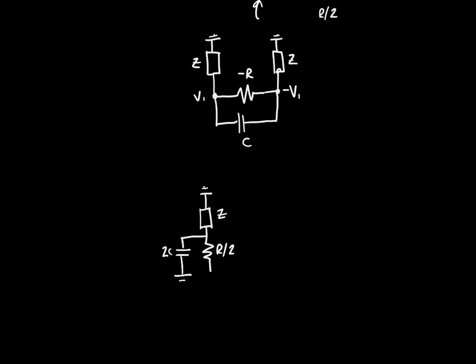R becomes R over 2, the capacitor becomes 2C, and those are both connected to ground. But remember that R was minus Gm over 2 times 1 minus 1 over GmRO, or sorry, that's our 1 over R. So 1 over R over 2 means we just multiply this whole side by 2, and so we just get rid of the 2. So our input impedance on each side is actually much simpler. It's just minus Gm times 1 minus 1 over GmRO.